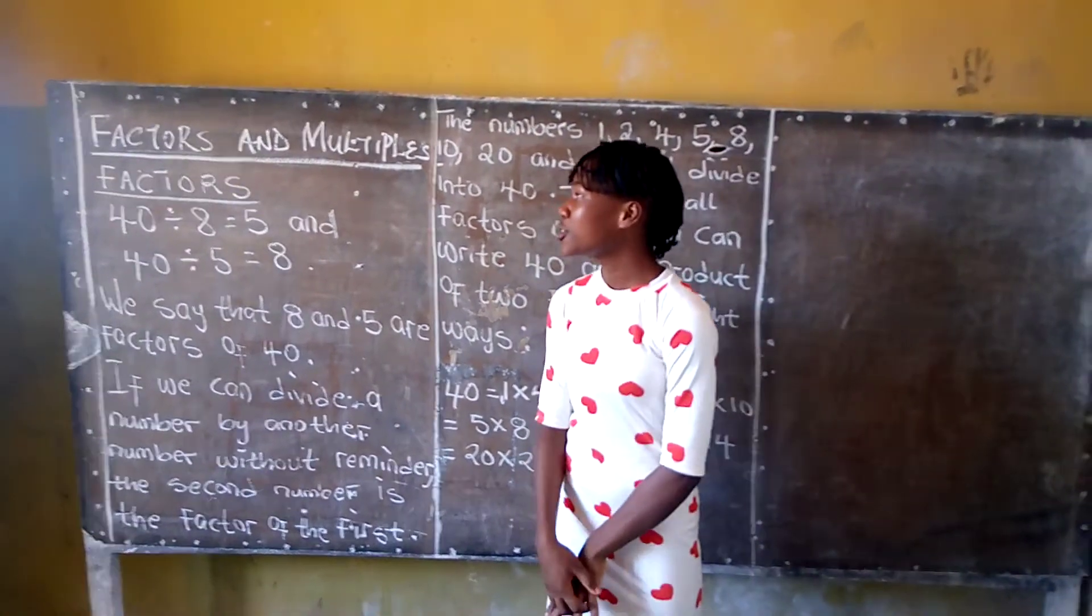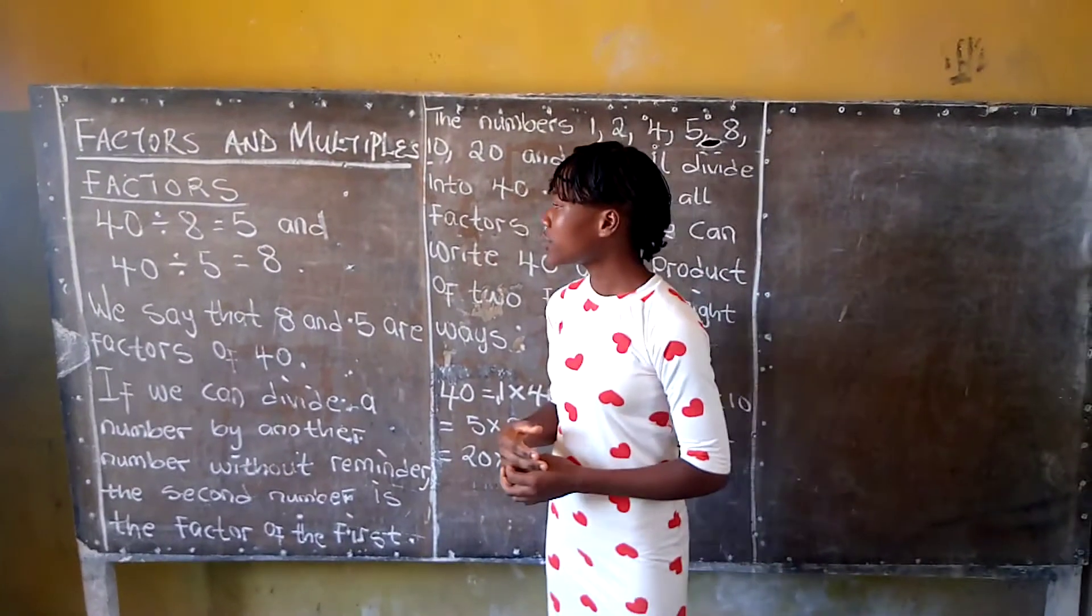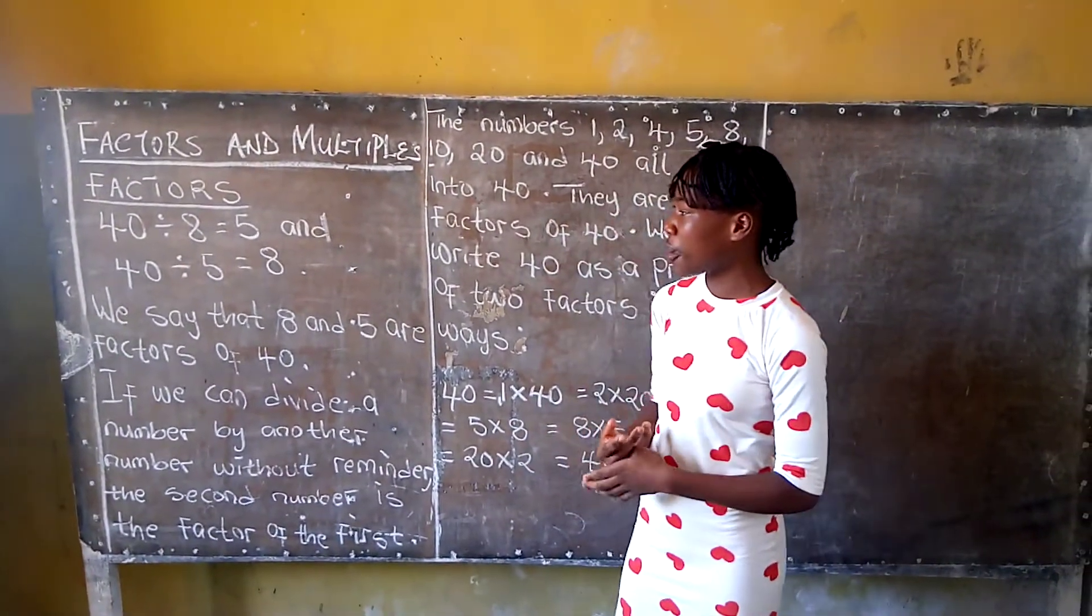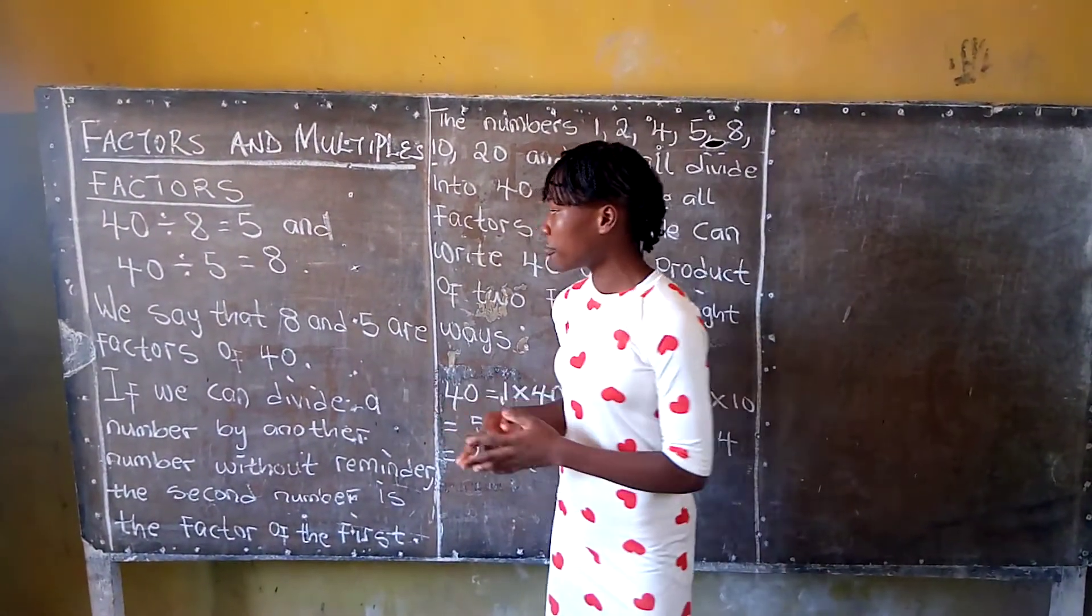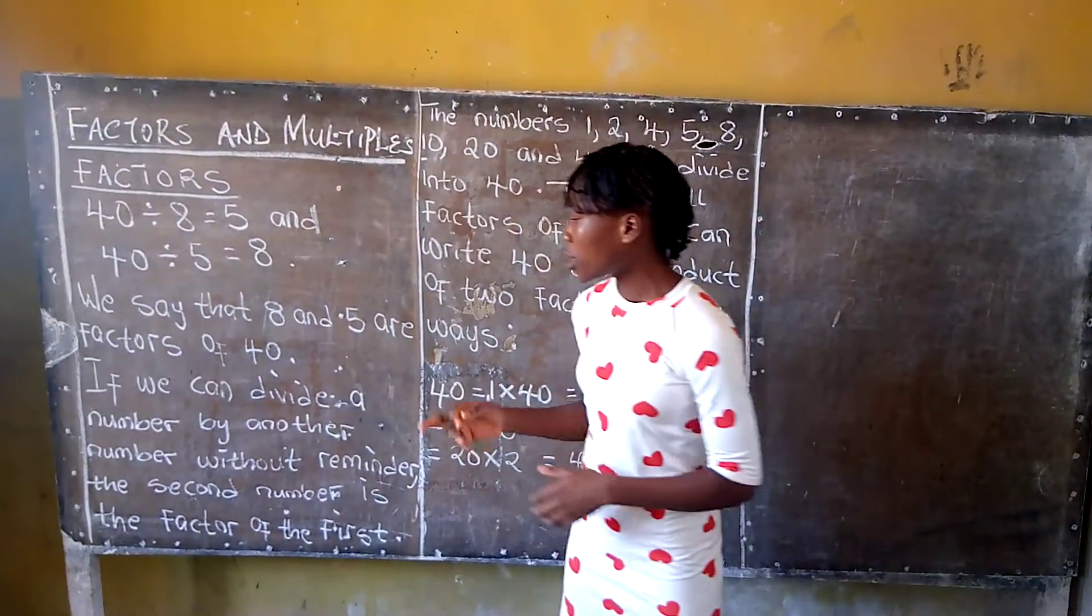Good evening viewers, today we will be talking of factors and multiples. Factors: 40 divided by 8 equals to 5, and 40 divided by 5 equals to 8. So we say that 8 and 5 are factors of 40.